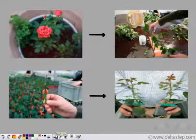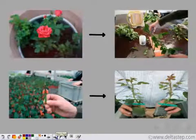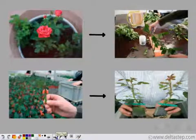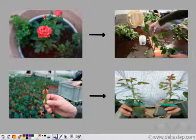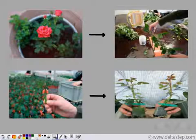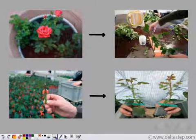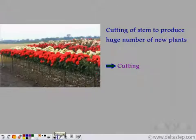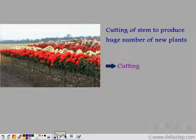If you want new rose plants in your garden, you can cut stems from an existing rose plant and plant these stem cuttings in the soil. Within a few days you will get a lot of rose plants. The process of cutting a stem and then sowing it in the soil to produce a large number of plants is known as cutting.